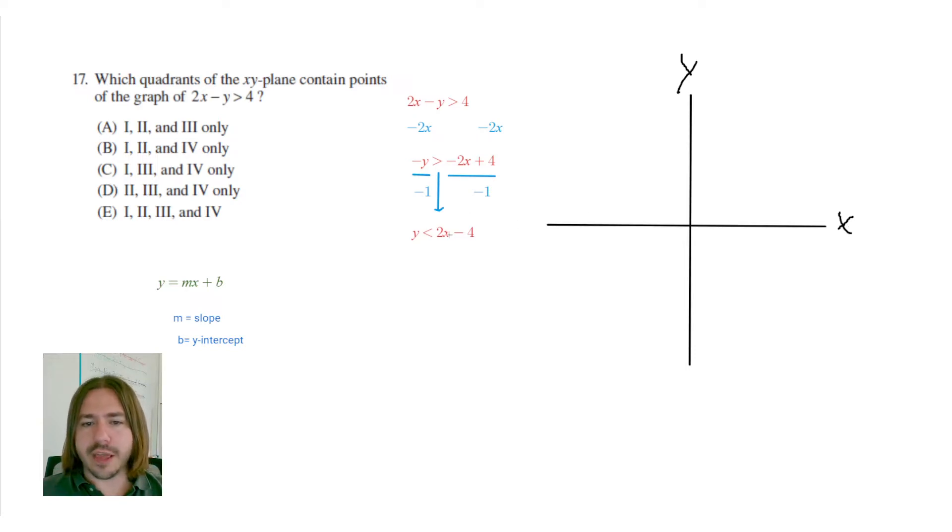So the y-intercept here is negative 4. So I'm going to plot a point at negative 4. I'll just sort of estimate where that is, like maybe right here. Let's make that a circle, not a square. And I'll just label this as negative 4.